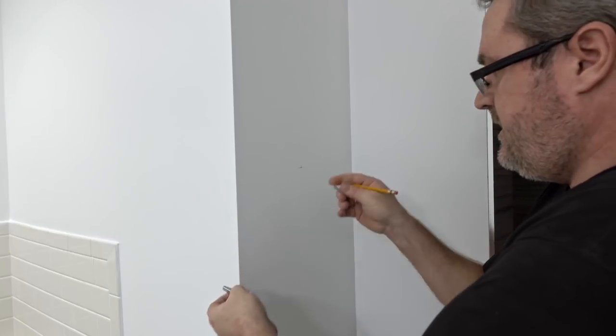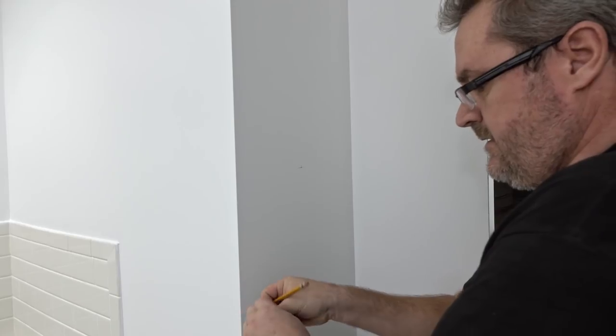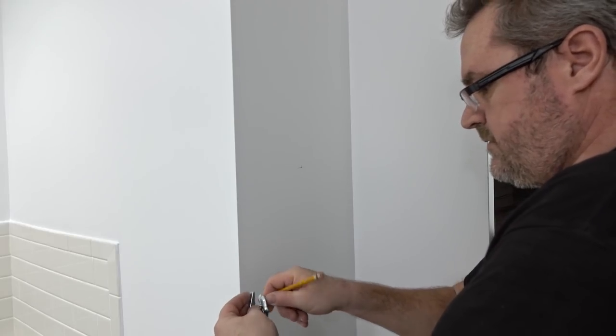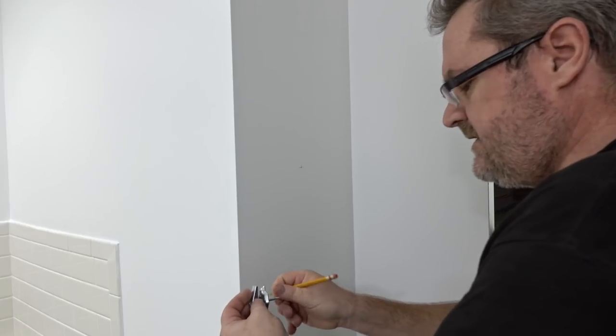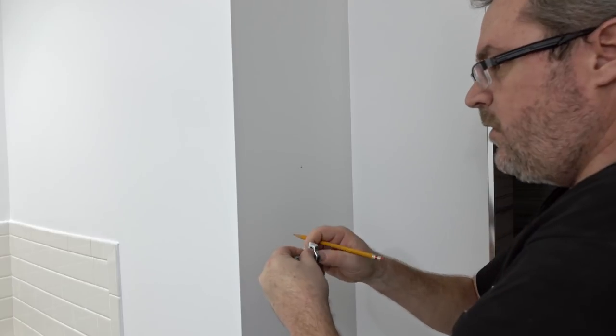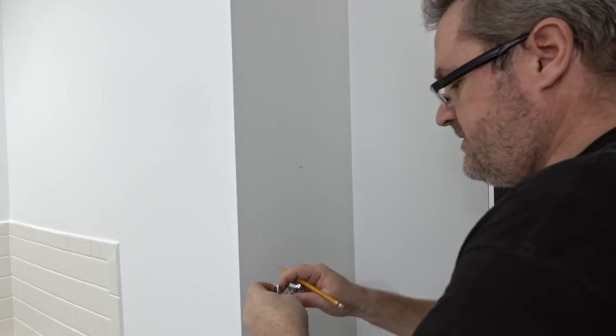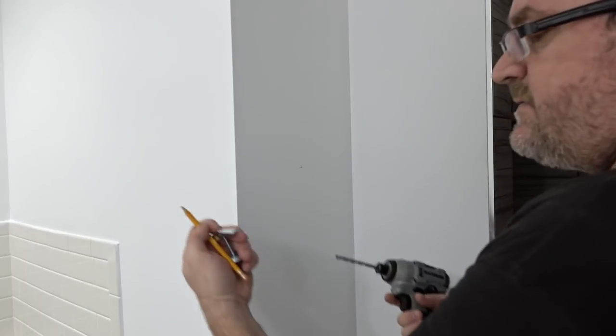And that'll do the bulk of the work to keep this thing up on the wall. I never mount these things with the idea that at some point in the future I might take it down. These are always permanent installations, so using a toggle like this is a good idea.